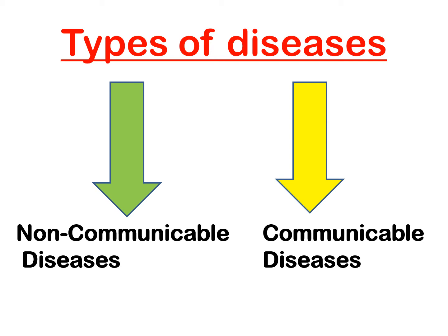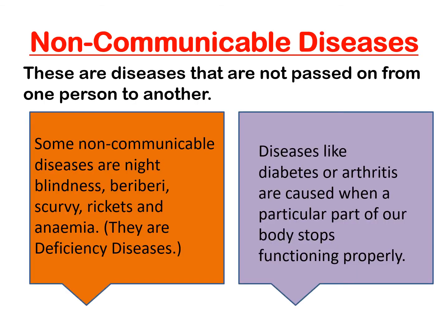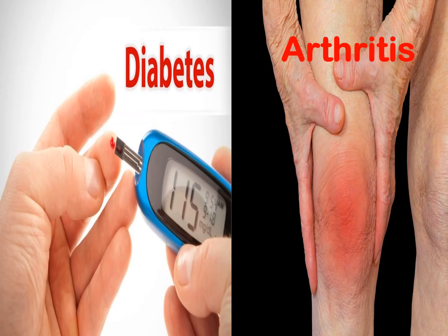The diseases are of two types: non-communicable diseases and communicable diseases. First, we will discuss about non-communicable diseases. These are diseases that are not passed on from one person to another. Some non-communicable diseases are night blindness, beriberi, scurvy, rickets, and anemia — they are generally deficiency diseases. Some diseases like diabetes or arthritis are caused when a particular part of the body stops functioning properly. Diabetes is related to blood sugar, and in arthritis, the patient feels pain and swelling near the joints.